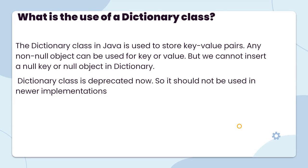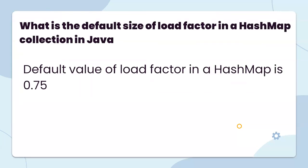What is the default size of the load factor in HashMap? The default value of the load factor in HashMap is 0.75.